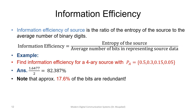Information efficiency is defined as the ratio of the entropy of the source to the average number of binary digits needed to represent it. For the previous example with four symbols represented in two bits and entropy of 1.6477 bits, the efficiency is 1.6477/2 ≈ 82.4%. This means approximately 17.6% of the representation is redundant.